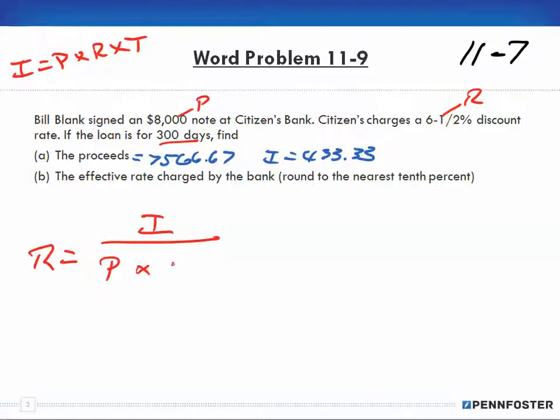So principal times the time. So our interest is in the numerator, $433.33. Our principal or our proceeds in this case is $7,566.67, because remember we're looking at an effective rate here after we've discounted it. That's why we're using the $7,566.67. And our time is 300 over 360.